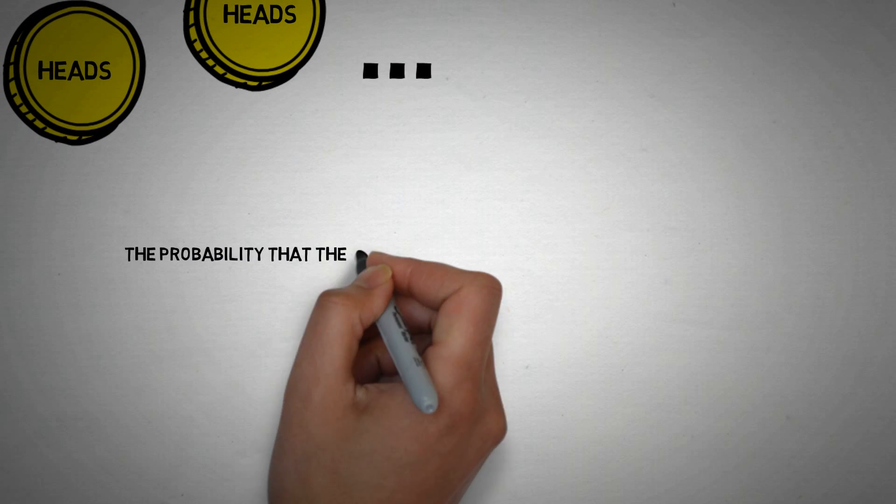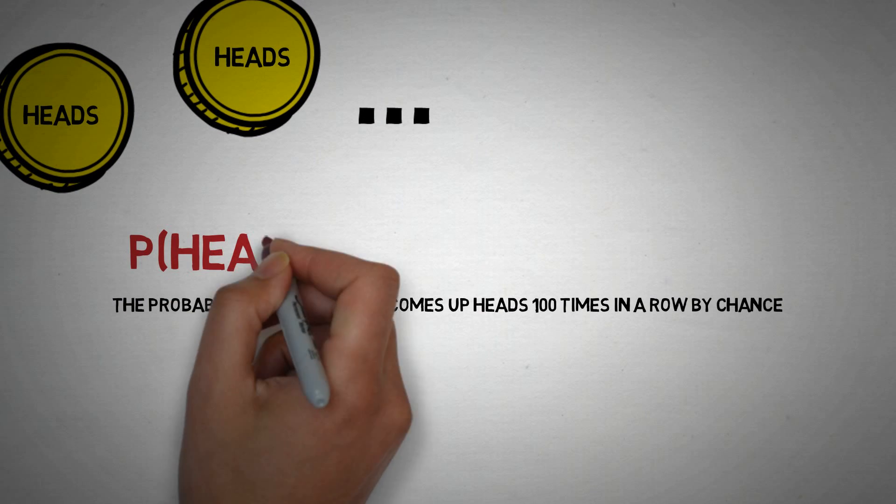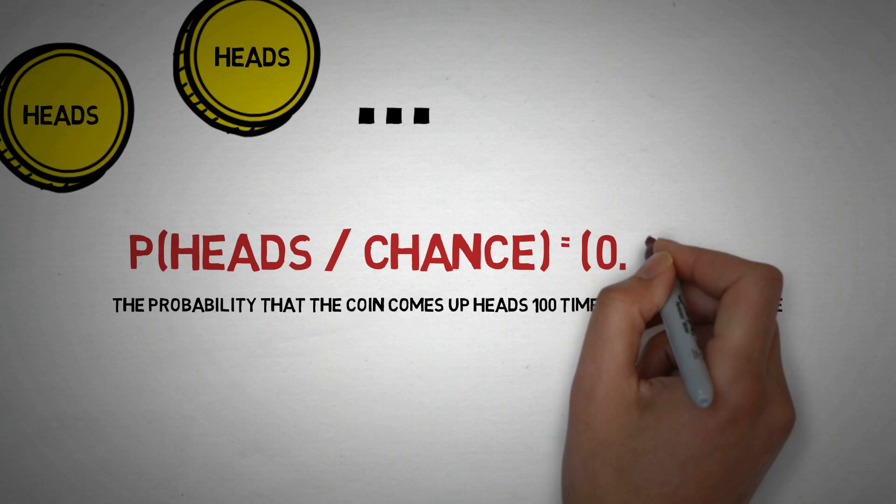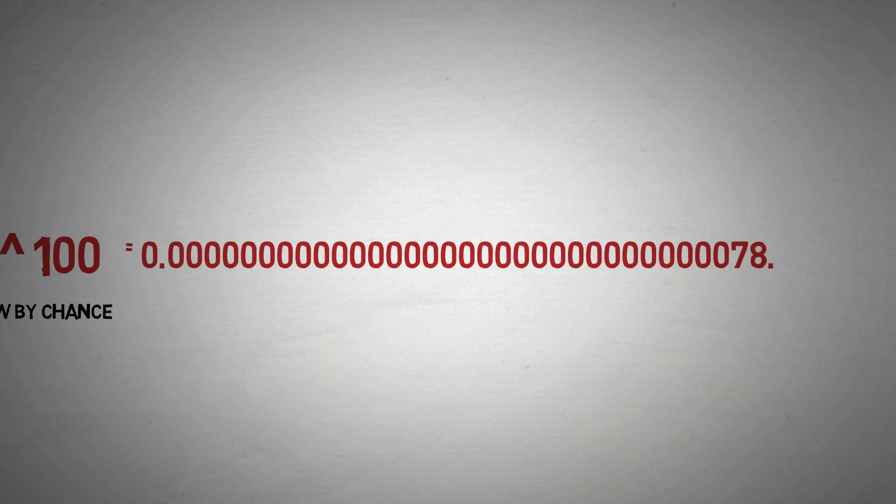So, the probability that the coin persistently comes up heads 100 times in a row is going to be very low on the hypothesis that the coin is fair. The appropriate degree of expectation is 0.5 to the power of 100, which is very low indeed.